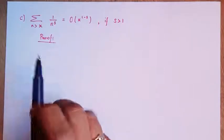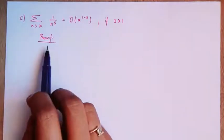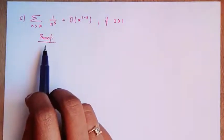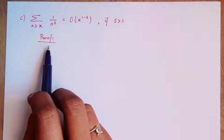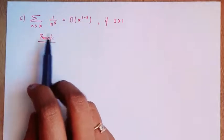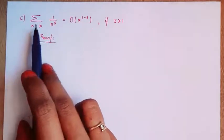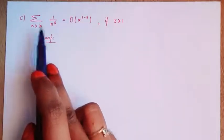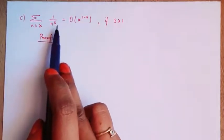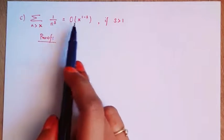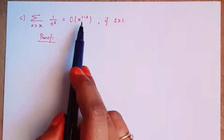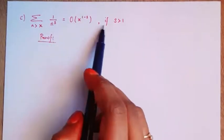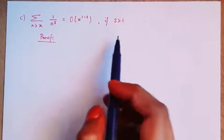Hello everyone. In this video we will see the remaining parts of some elementary asymptotic formulae theorem. Part C states that the sum over n greater than x of 1 over n^s is equal to big O of x^(1-s), if s is greater than 1.